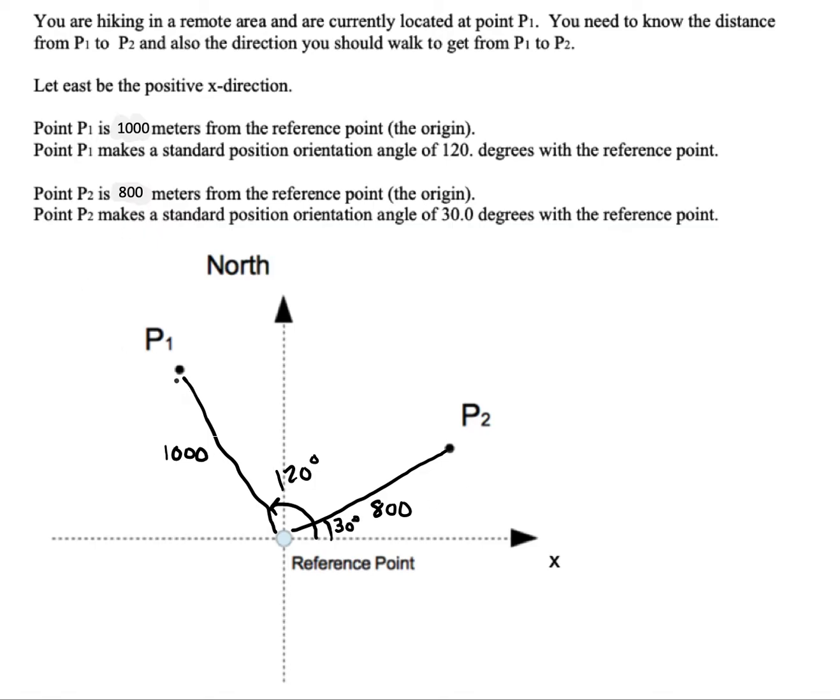What we've established is two position vectors. Position vectors, if you recall, will point from the origin of the coordinate system to any point in the plane. What we're trying to find is a new vector from P1 to P2 in order to tell the person how to walk to get there. We just want to use a little bit of vector mathematics to find that.